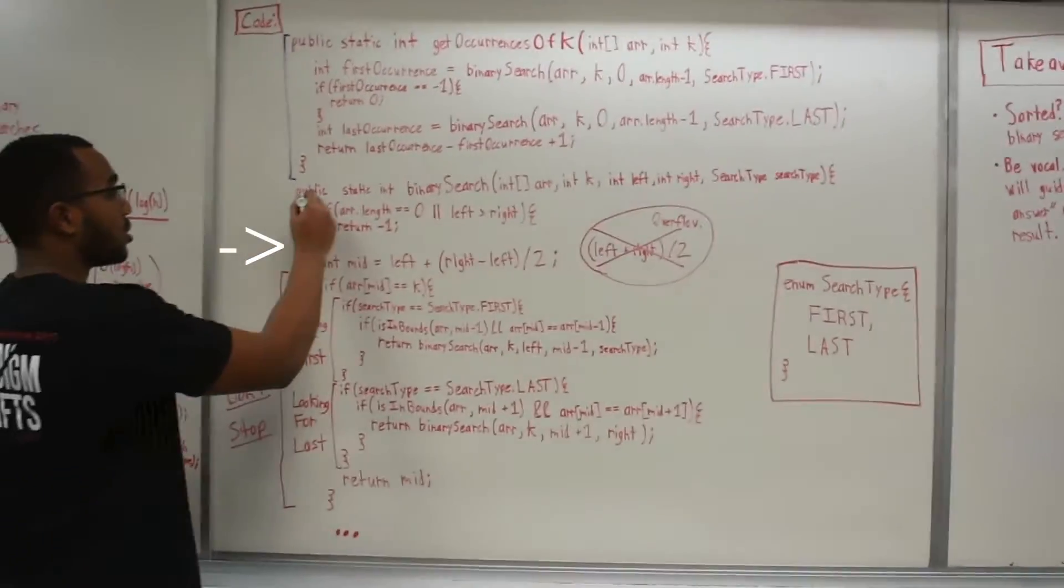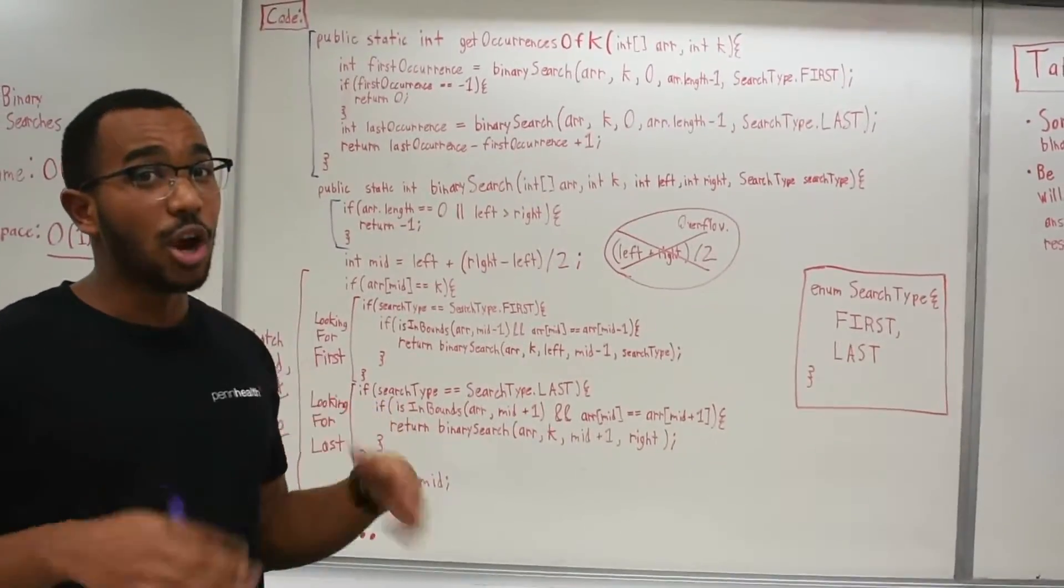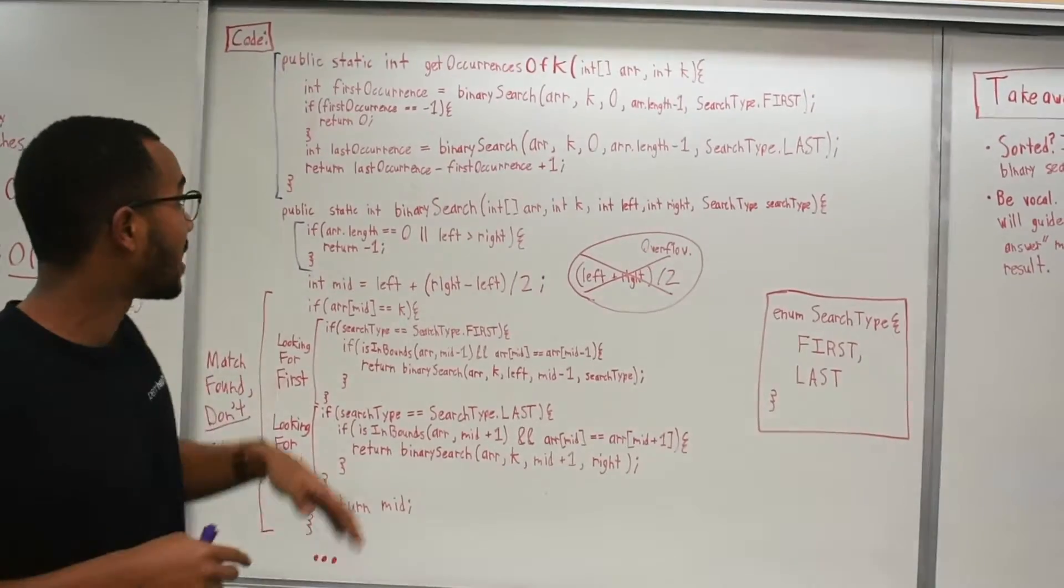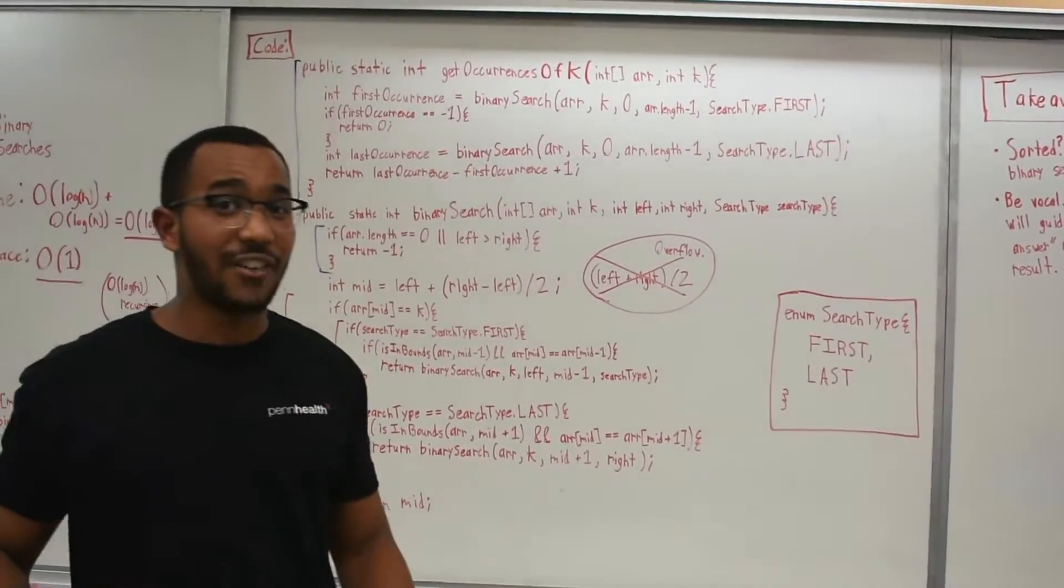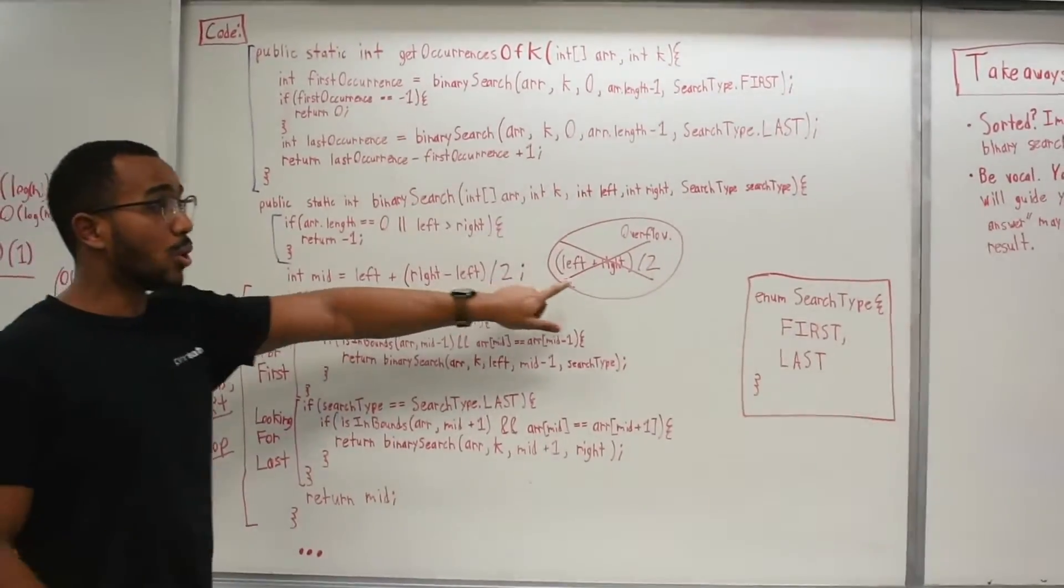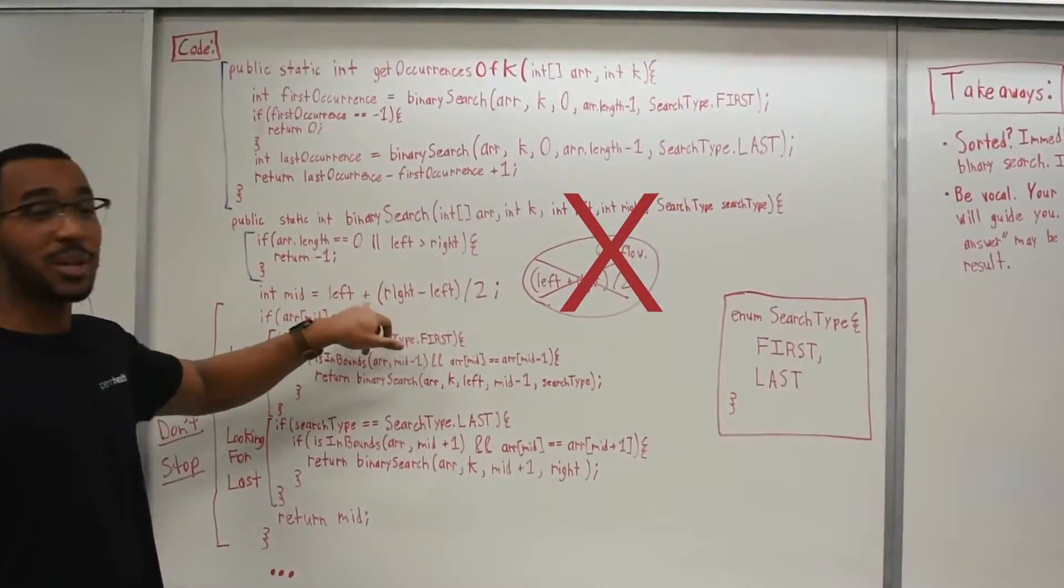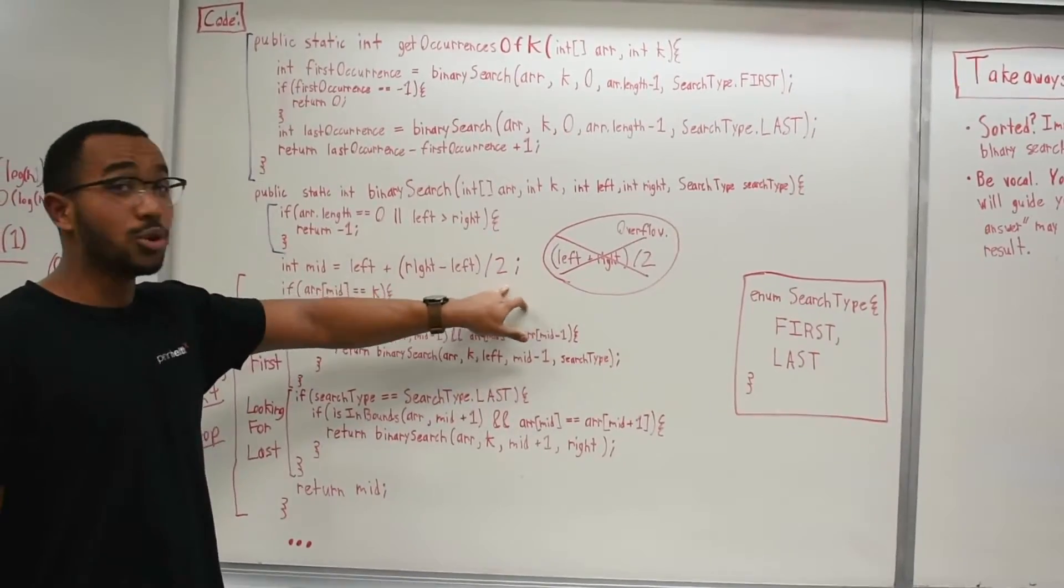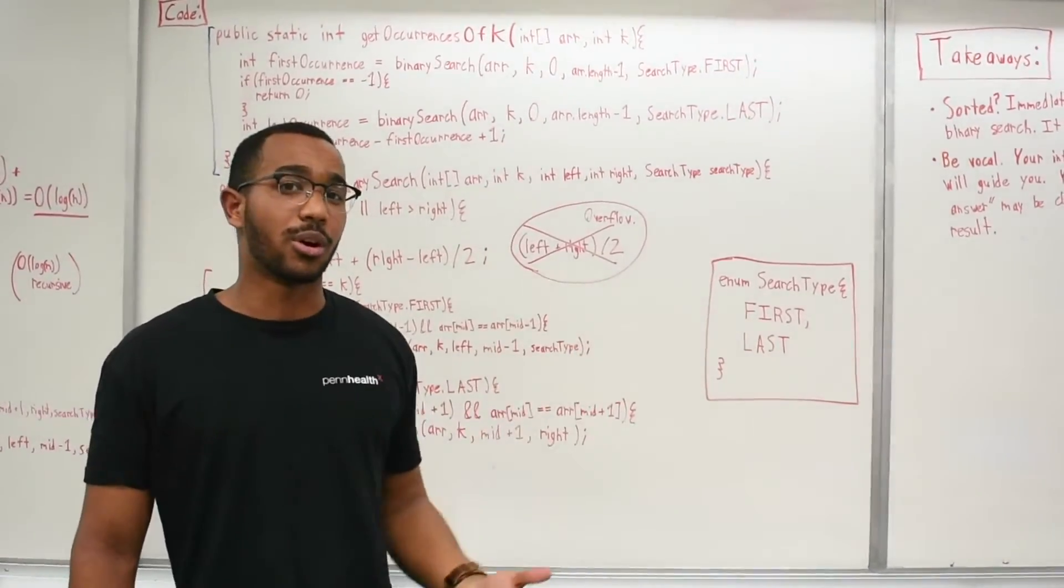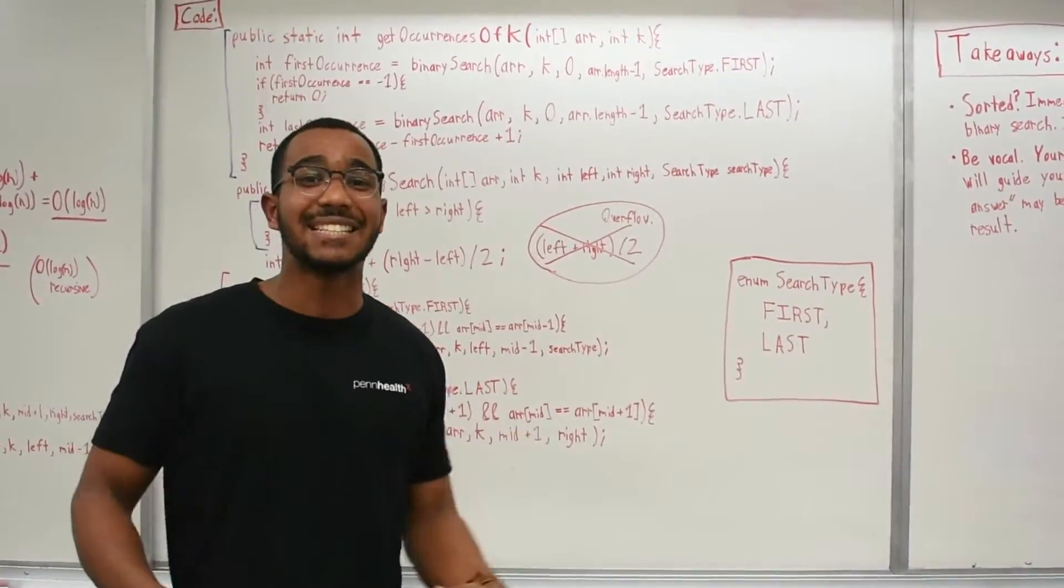This is our base check. So if the array is empty or our left has gone past the right, then we know that either the element is not even in there or we've searched the whole search space and left is past right. So at that point, we can just return minus one. We have not found an answer. So then we get the midpoint. This is actually key. You don't want to do left plus right divided by two. You want to do, you want to do this. You want to do left plus right minus left divided by two, because this is prone to overflow. This is a really subtle point. And it's really impressive. If you tell your interviewer that this is prone to overflow, this is the right way to do it because it shows you have an attention to detail.